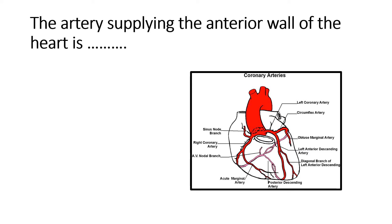The left coronary artery, known as the left main coronary artery, divides into two branches: the left anterior descending artery, or LAD, and the left circumflex artery. The left anterior descending artery supplies the anterior part of both the left and right ventricles and descends downward.